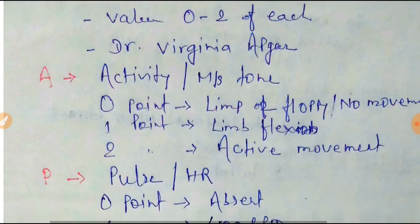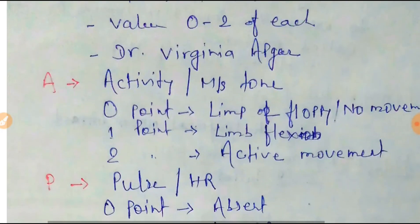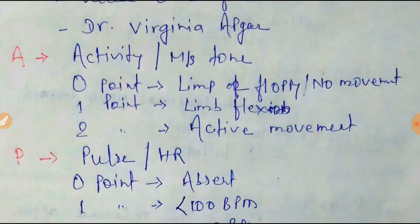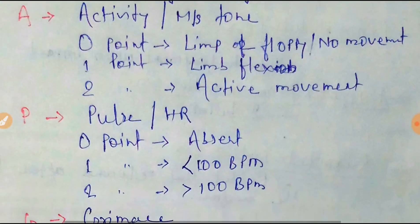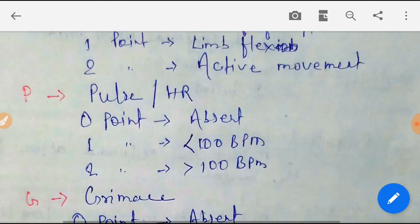APGAR starts with A, which stands for Activity and muscle tone. 0 points indicates limb floppy or no movement, 1 point indicates limb flexion, and 2 points indicates active movement.